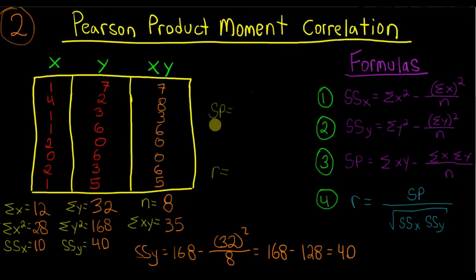So now we're going to go ahead and calculate our sum of products. And so we're going to use formula number 3. And you can see here, sum of products is equal to the sum of x, y, which we've calculated to be 35 minus the sum of x times the sum of y over n. So that's going to be 12 times 32 over 8. And then if we solve for 12 times 32 over 8, we get 48, which then gives us negative 13.